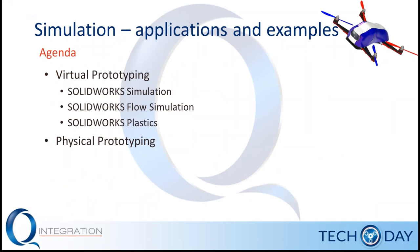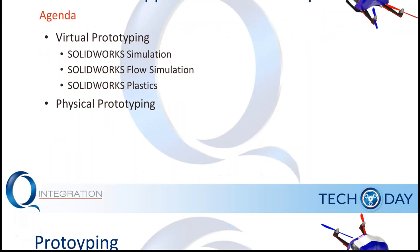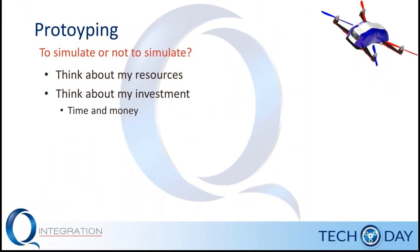As many of you know, when engineering designs are ready for prototyping, there are a couple of different routes we can go. We can either prototype virtually, which may include software such as SOLIDWORKS Simulation, Flow Simulation, or Plastics. Or we can go the route of physical prototyping, where we actually build the prototype and test it in a physical environment.